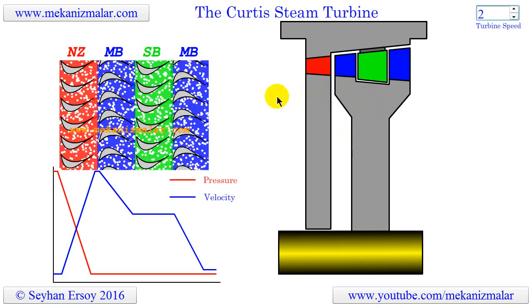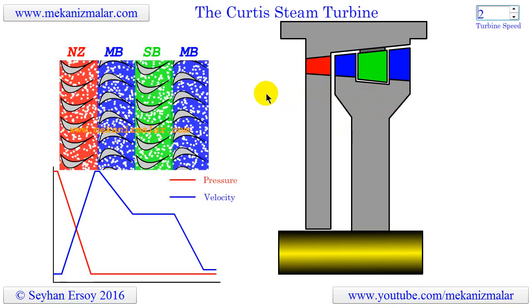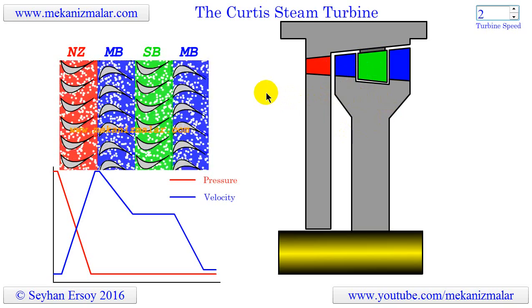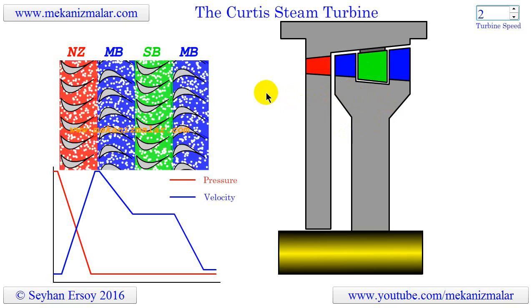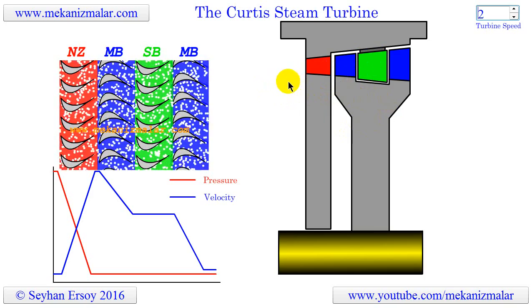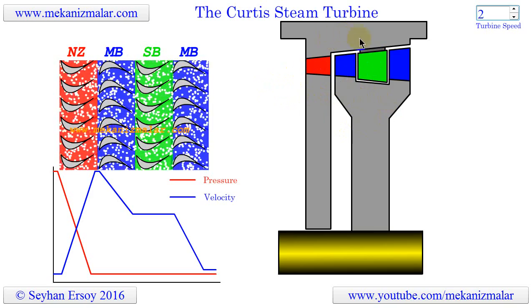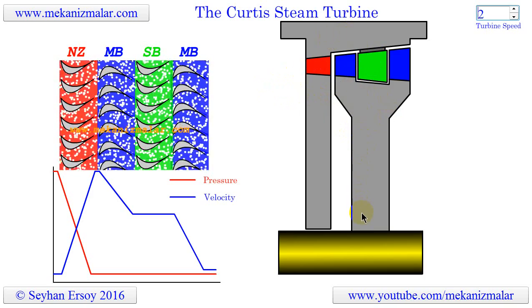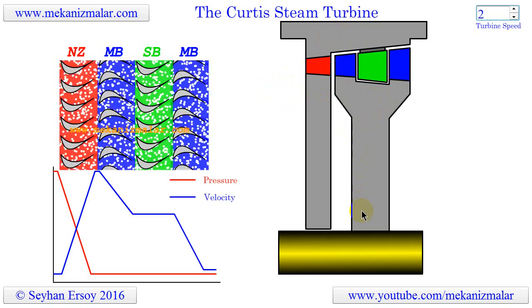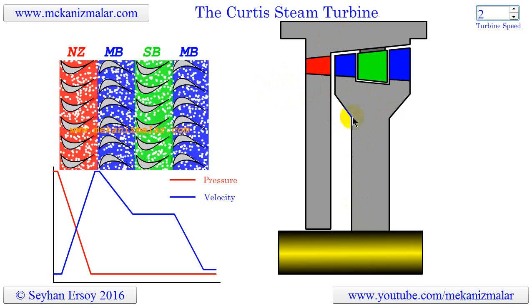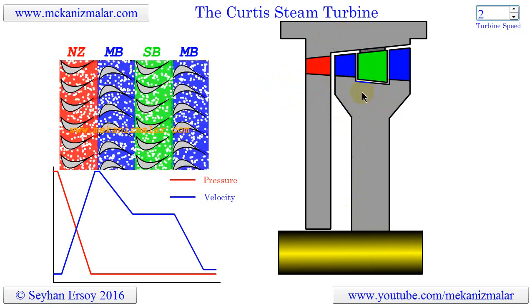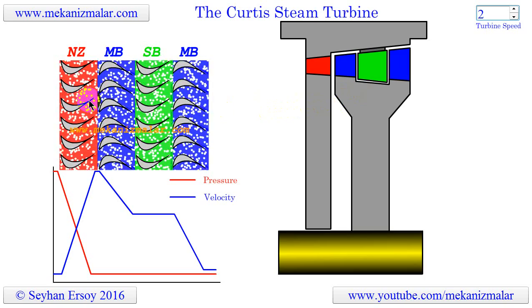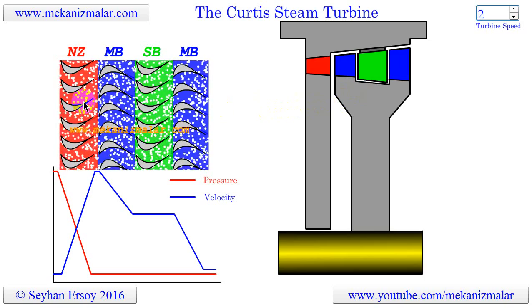Showing steam motion in axial turbine stages with 2D animation is very difficult. The solution is to show a cross section of the turbine in the axial direction without animation. This cross section is shown at the right of the video, and an animation of the steam passing through the blades is shown at the left.